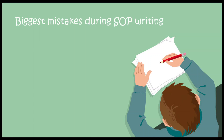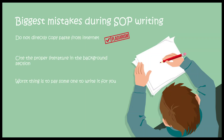Here are the biggest mistakes people make. Do not copy-paste from the internet. There are automated plagiarism-detection tools, and if your application shows direct copying, it will be rejected immediately. It's unethical. Also, cite original literature properly in your background section — whenever you claim that research has shown a particular molecule is involved in a particular process, cite the actual paper. Scientists value original literature citations and will judge you on that.